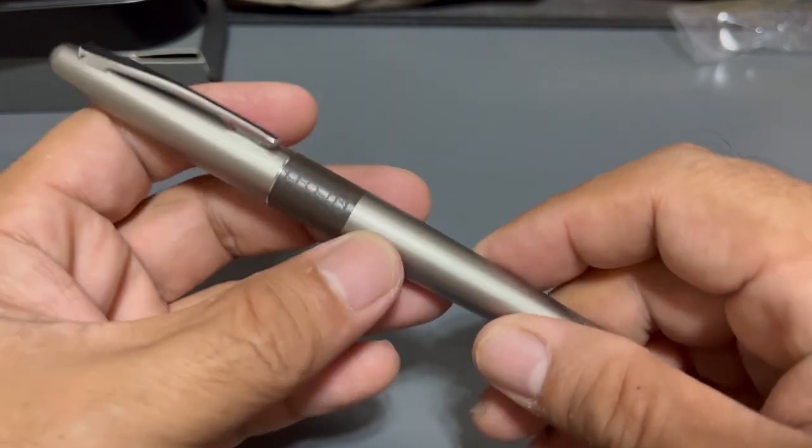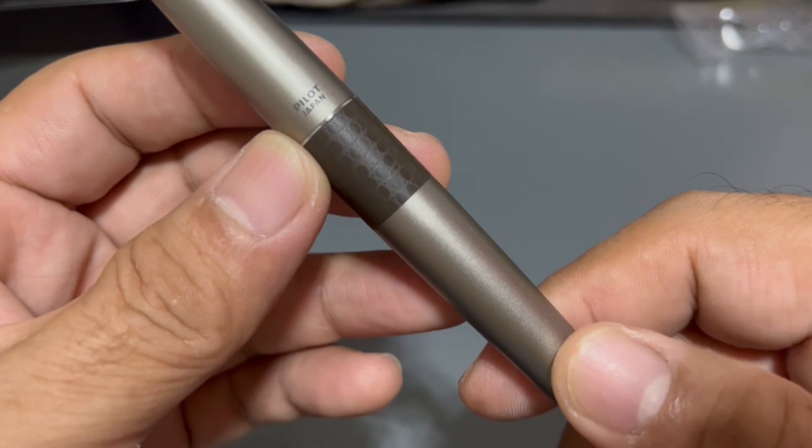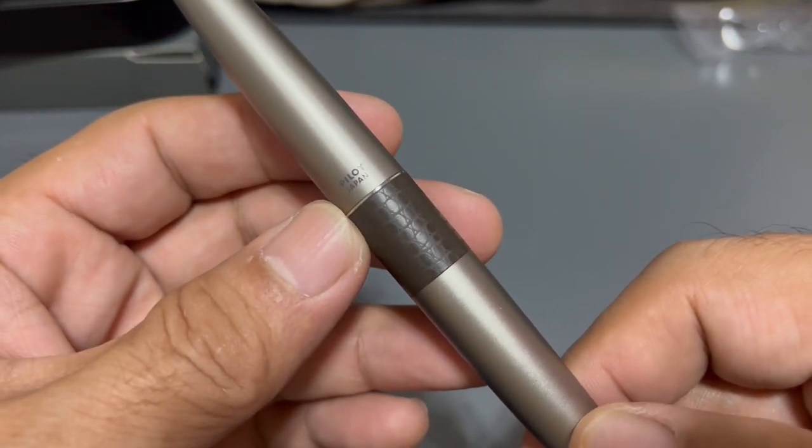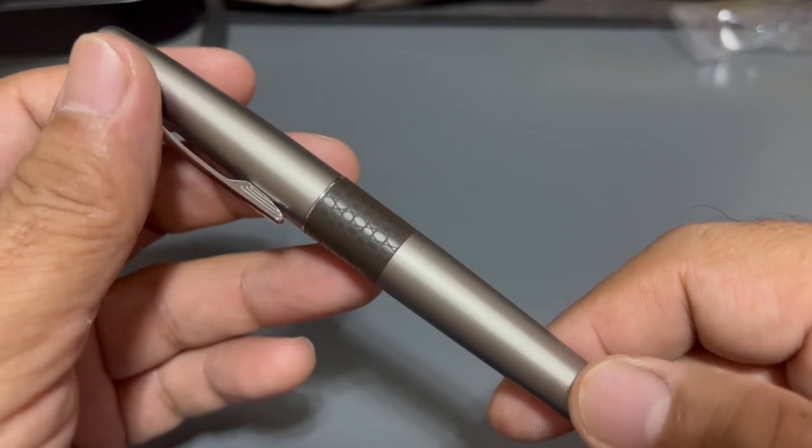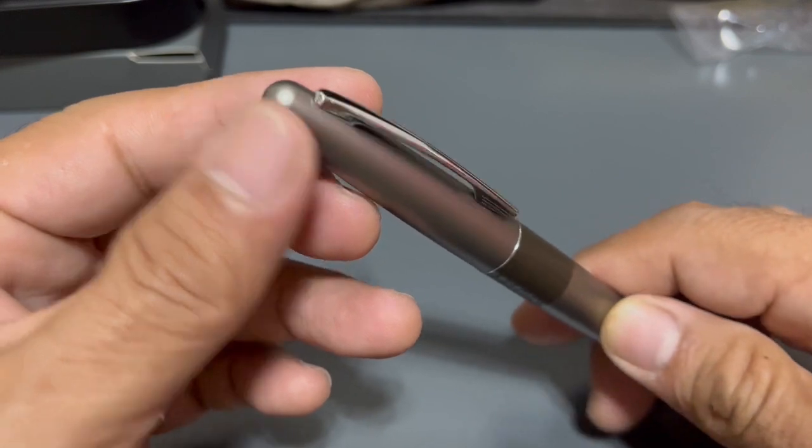There is also a small chrome band running between the cap and the barrel of the pen. On the back side of the cap we have PILOT Japan. It has a chrome spring metal clip. The clip is well made, works well, and serves its purpose.